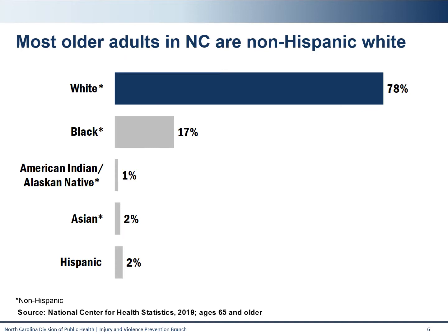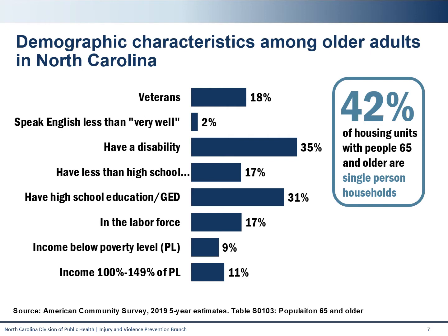Population data shows us that most older adults in North Carolina are non-Hispanic white. This is important to note as it impacts many of the trends that we will see in falls and TBI data later in the presentation. We also looked at some additional demographic characteristics that may be related to unintentional falls. From this chart, we see that 35% of older adults in North Carolina have a disability, which may increase their risk of fall. We also have a high percentage of veterans in our state, with 18% of older adults identifying as having served. These groups are often more likely to experience falls or traumatic brain injuries.